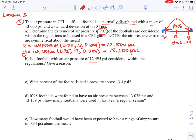So is a football with an air pressure of 12.495 PSI considered to be within the regulation? And the answer is no, it's not. And that's because this number here is less than the 12.500 PSI. So it's actually in the 5% range where those footballs are not allowed. So the answer for that one's no.